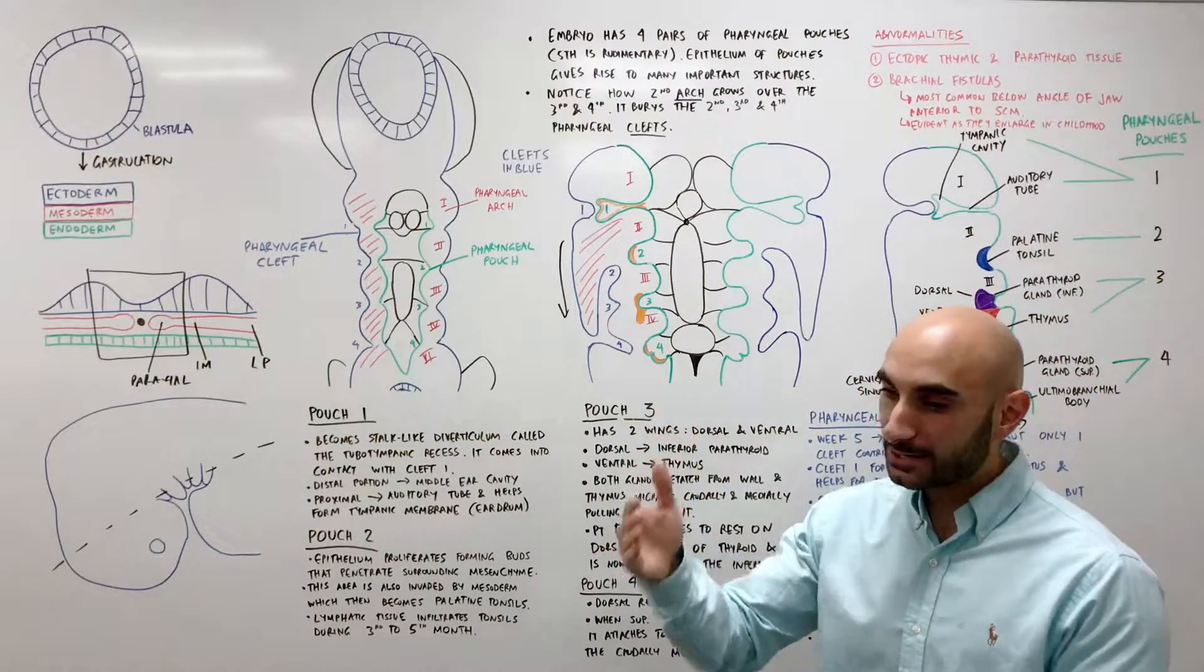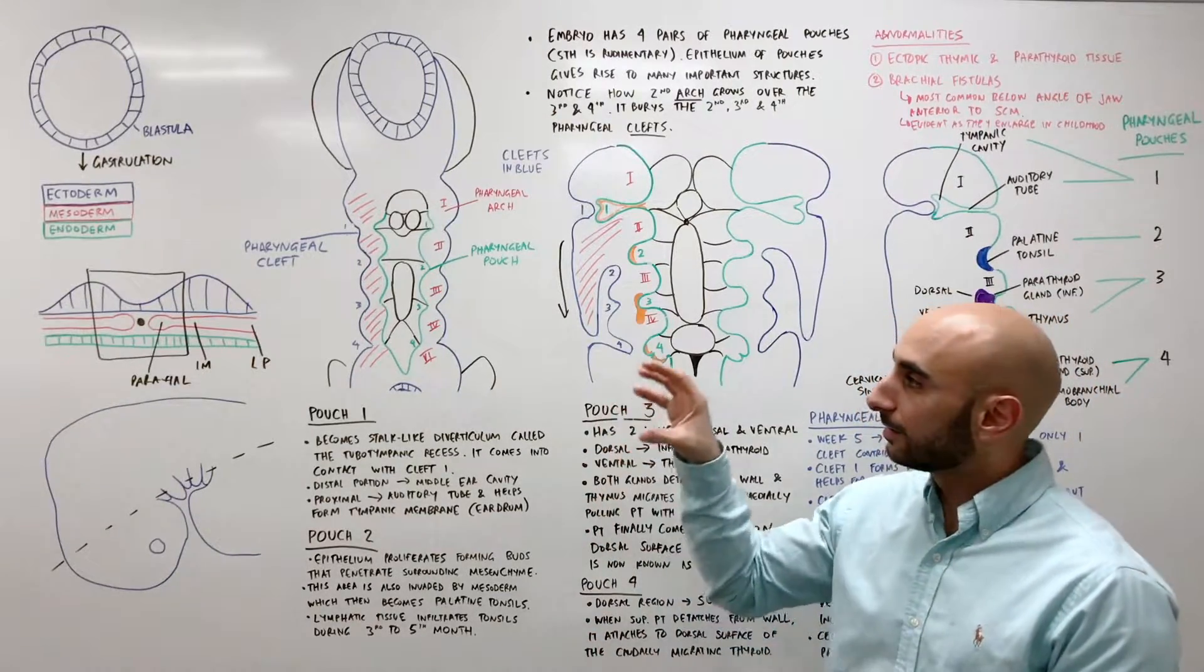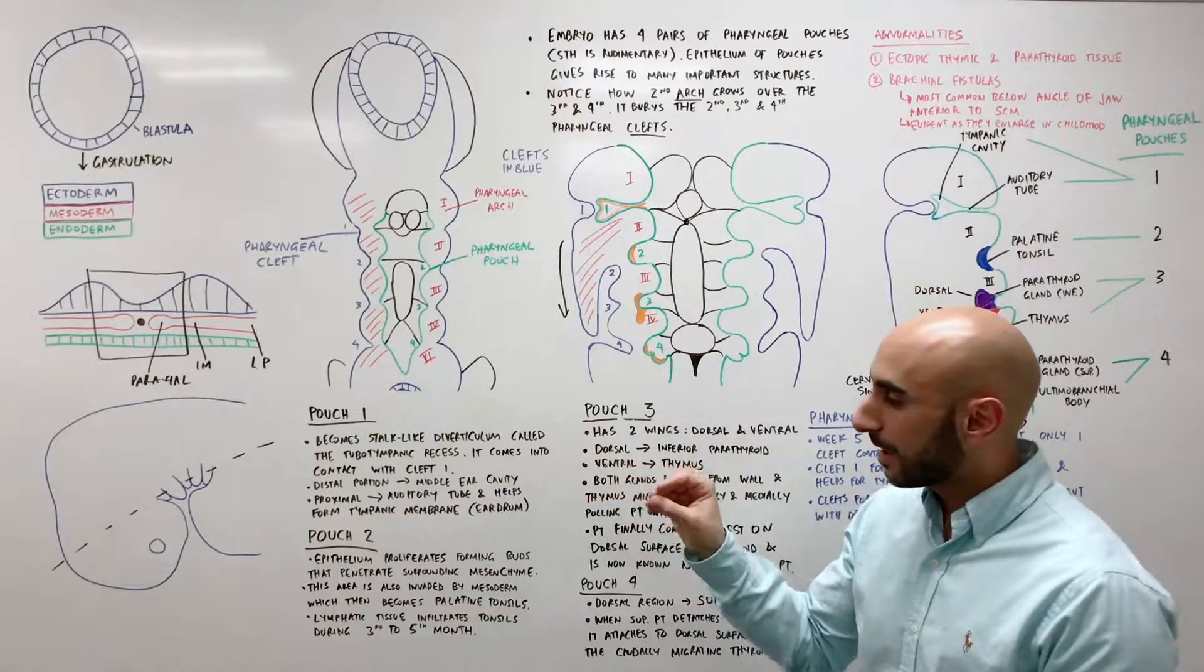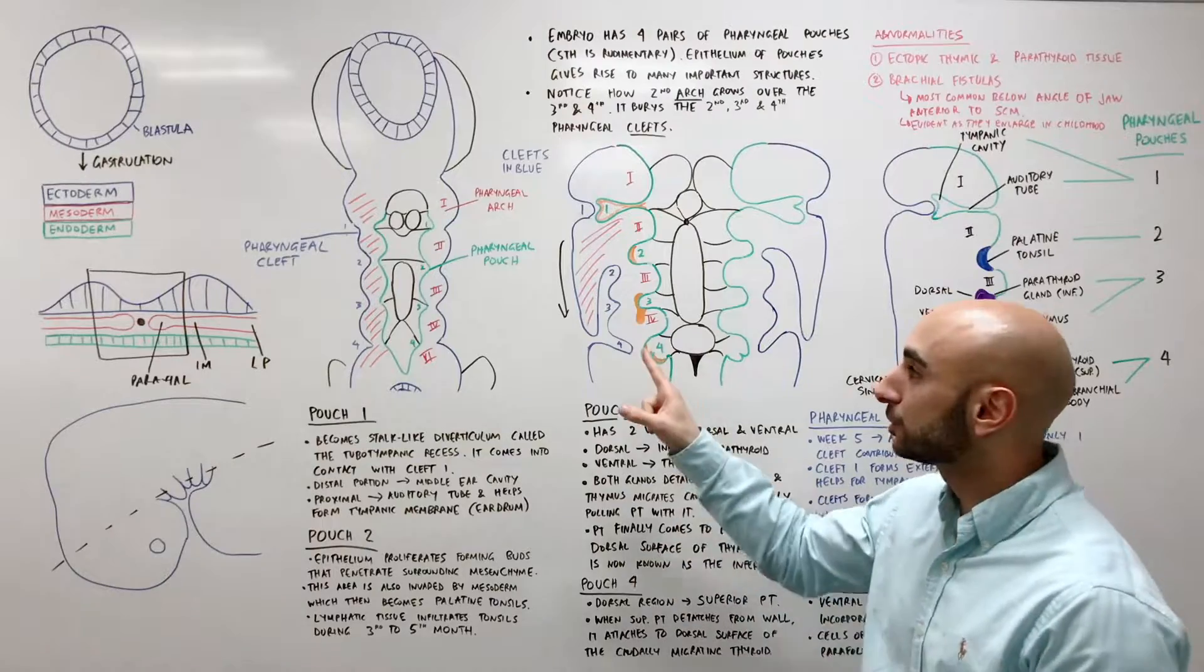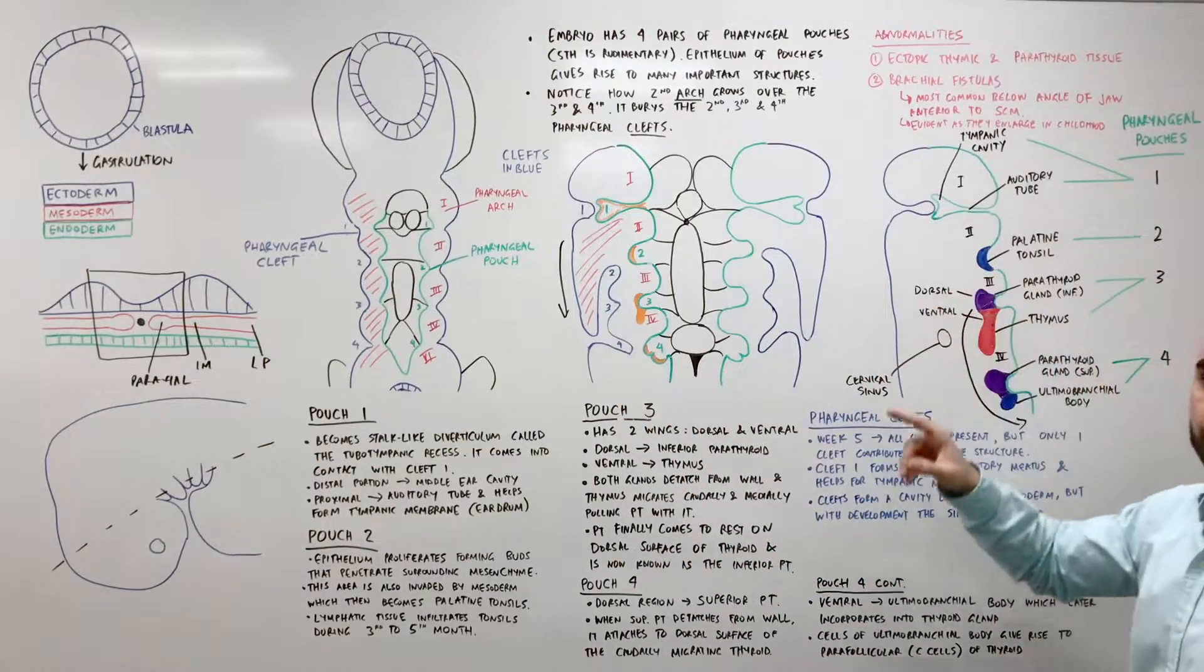So in summary, pouch 1, tympanic membrane, eardrum, middle ear cavity and internal ear canal. Pouch 2, palatine tonsil, that's it.